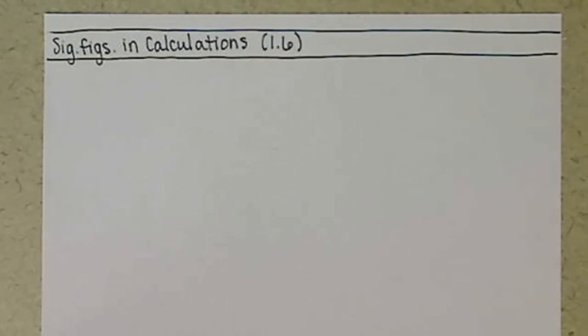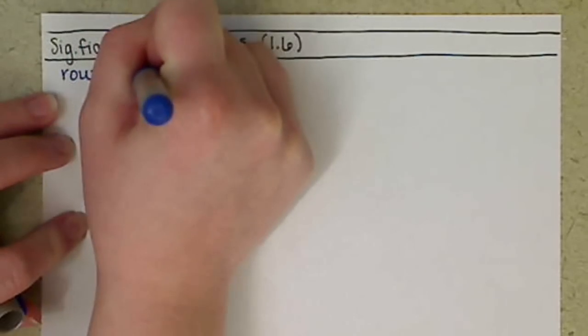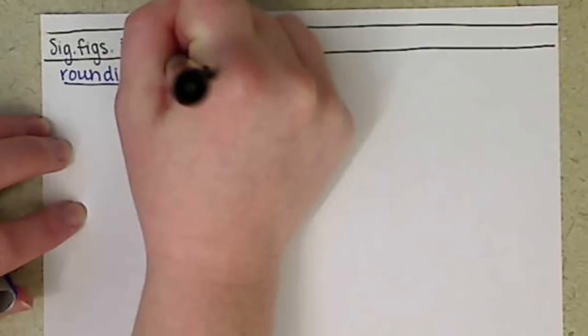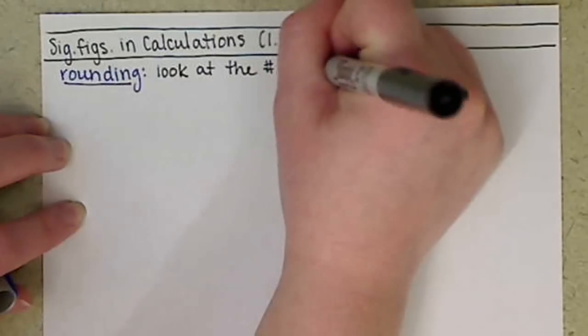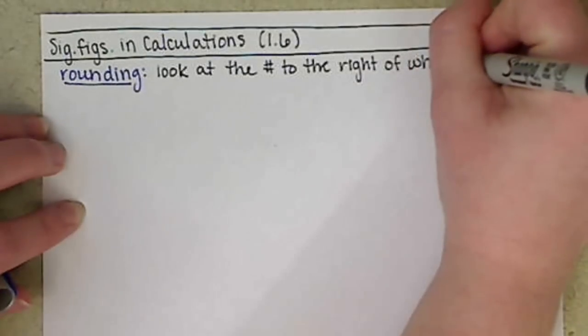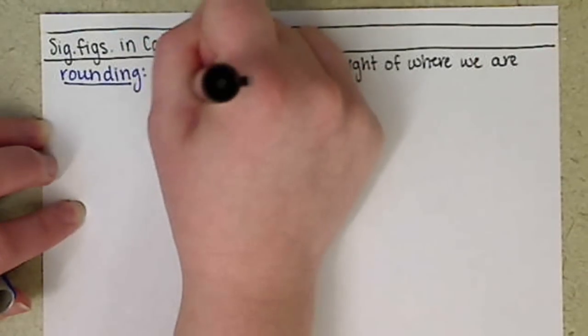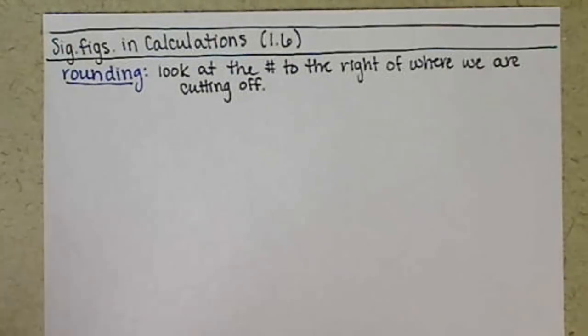First off, before we get to the rules of sig figs in our calculations, we want to talk about rounding. We are going to be cutting off and we want to round off appropriately. There's nothing new or special about these rounding rules, just some of you may not know the explicit rules. We want to make sure we're all on the same page.